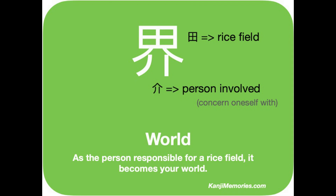We start by looking at the green kanji memories card. At the top of this kanji is the familiar shape of the rice field, with its four divisions. The element below is itself a kanji, which is used in words to do with nursing care. We will call it 'person involved,' meaning someone who gets involved with a problem.